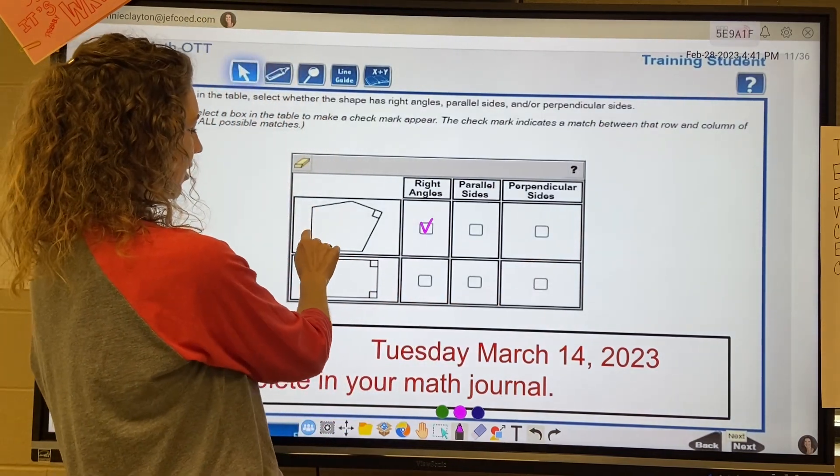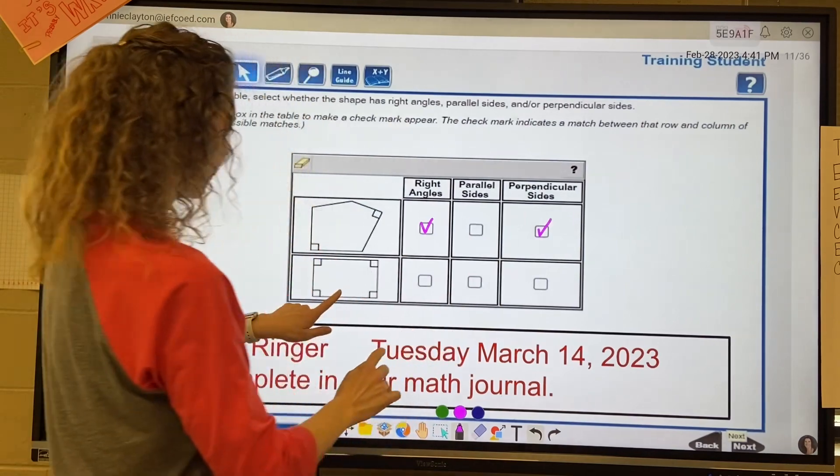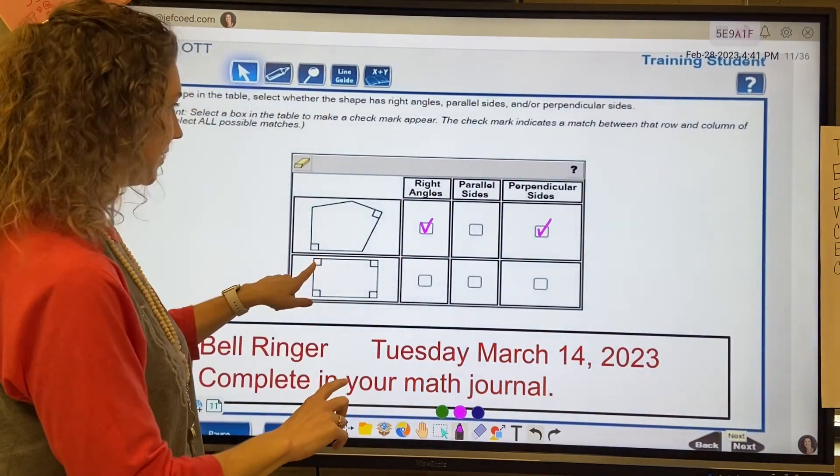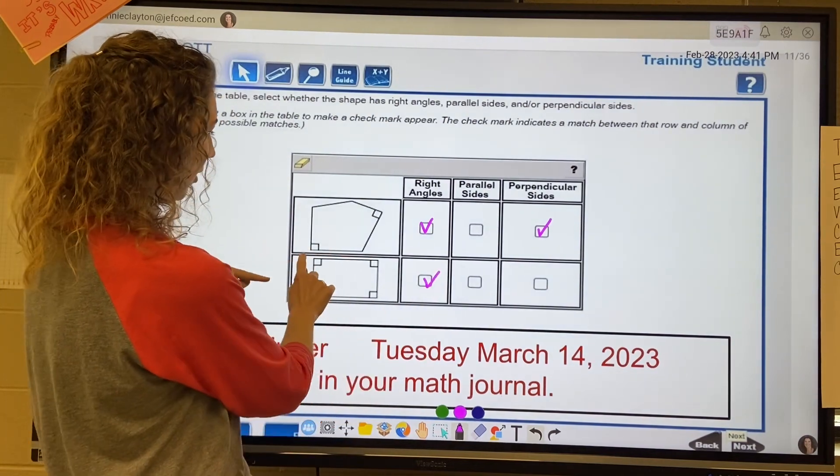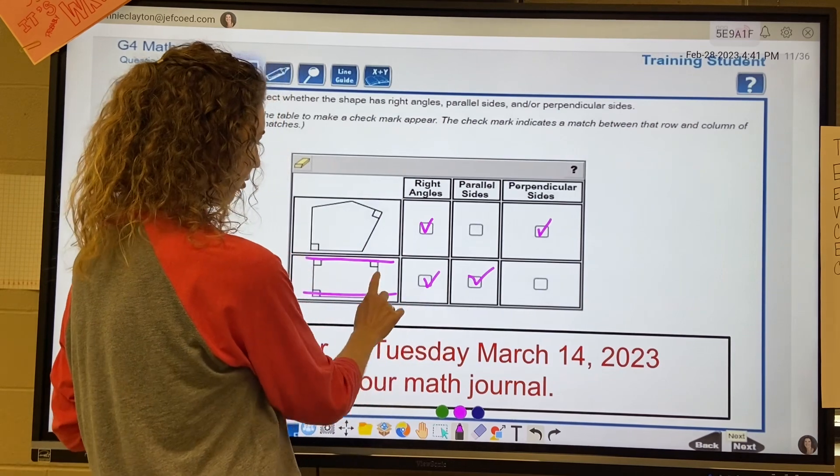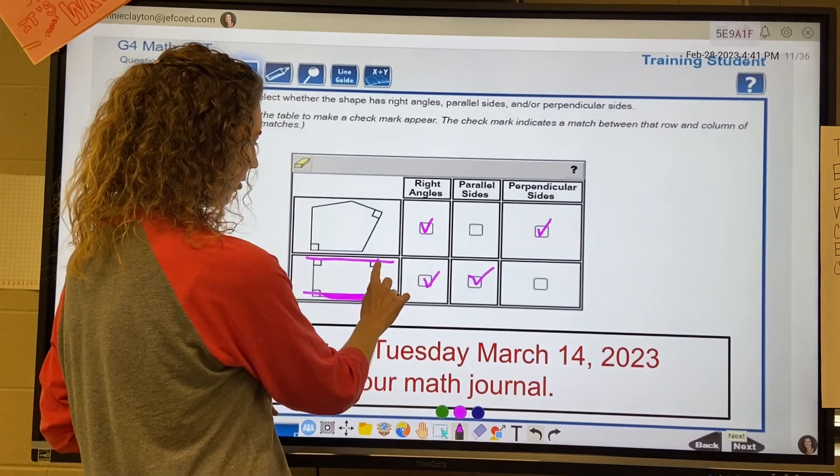Next shape, this is a rectangle. Remember, fourth grade question. It does have right angles. It does have parallel sides here and here, and it does have perpendicular sides because perpendicular sides meet at a right angle.